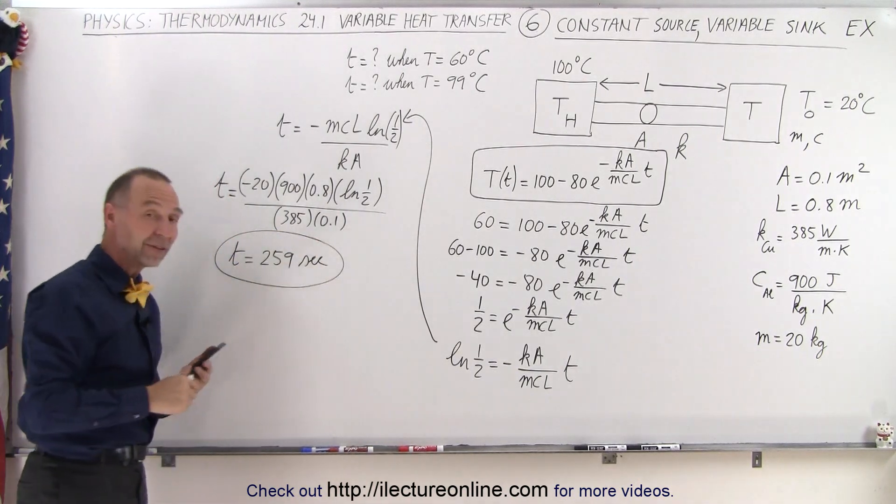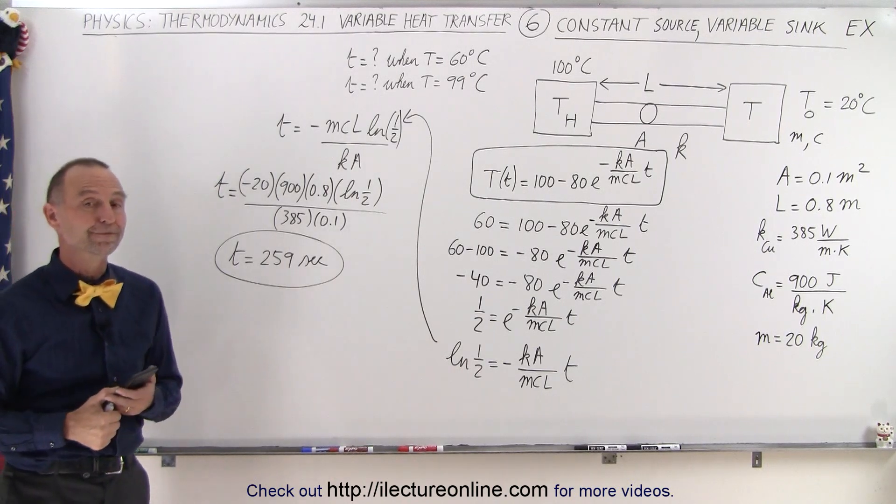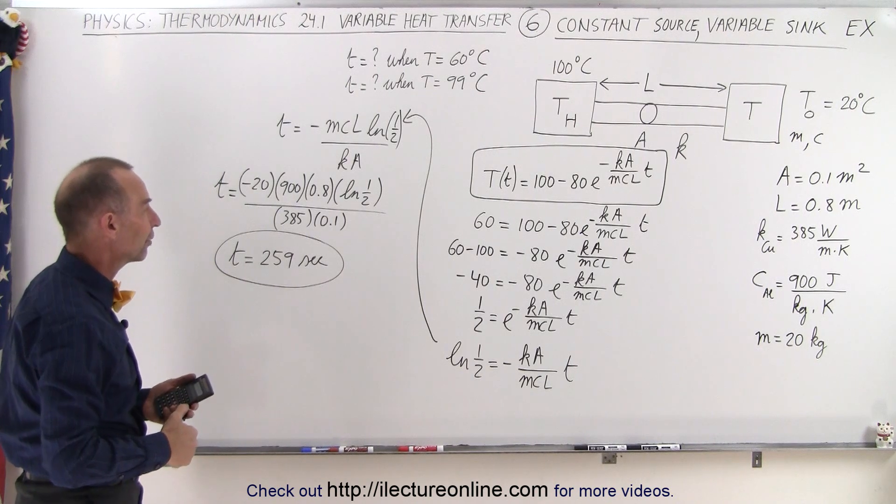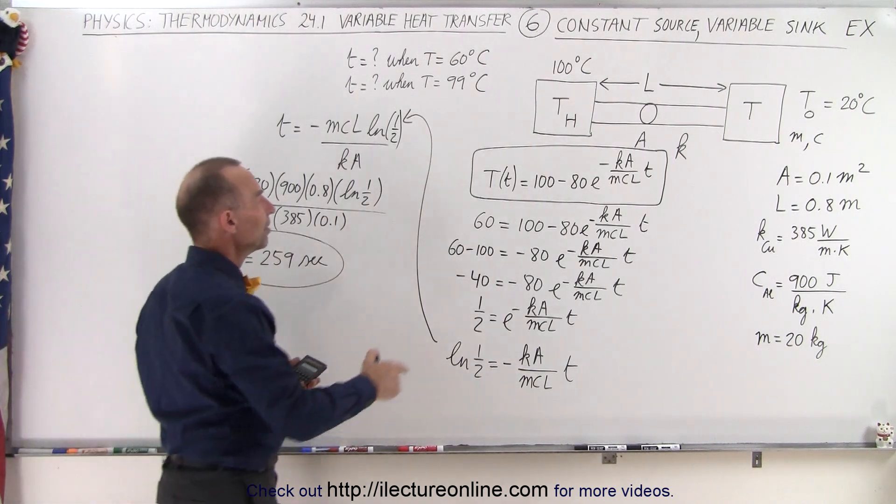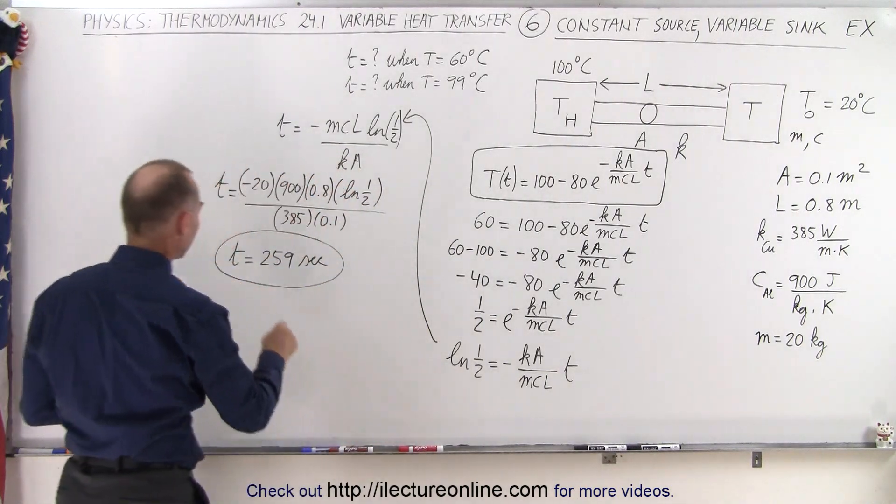Alright, so after 259 seconds, the heat sink will have reached a temperature of 60 degrees centigrade. Now, how long will it take for it to reach 99 degrees centigrade? So what changes? That means instead of 60 here, we're going to get a 99. So for part B,